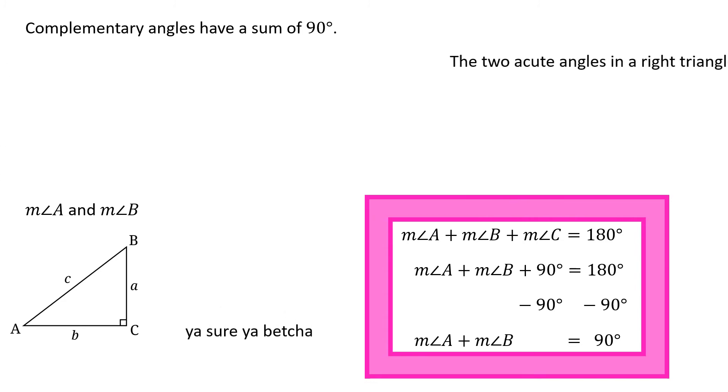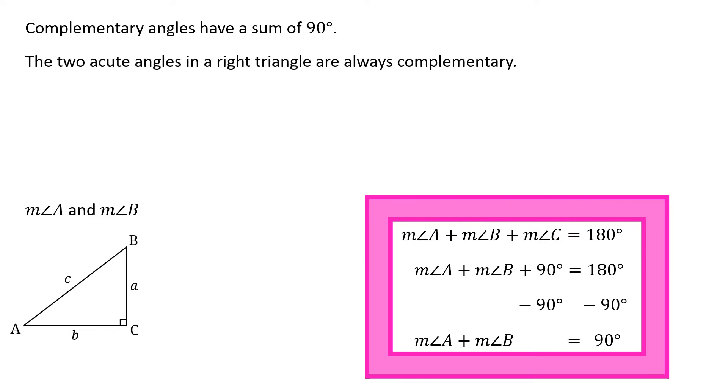So if we're talking about measures of angle A and B in a right triangle, yes, they are complementary. All right, the two acute angles in a right triangle are always complementary. All right, that'll also be true for any right triangle that the two acute angles will be complementary. In other words, they'll add up to 90 degrees.